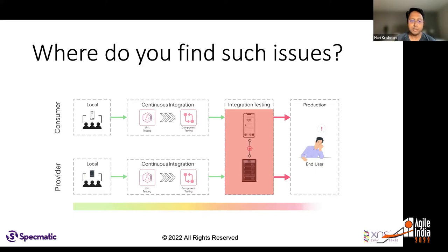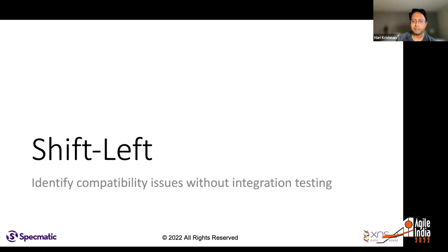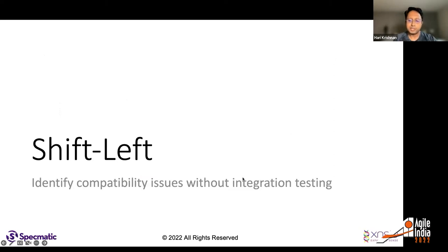This is a double whammy: it compromises your integration testing environment and blocks your path to production, leading to unhappy users. The cost heat map shows that issues found locally are cheap to fix, but compatibility issues found only in integration or production are expensive in both user experience and resolution time. What we'd like to do is shift left the identification of such compatibility issues and potentially eliminate integration testing altogether.